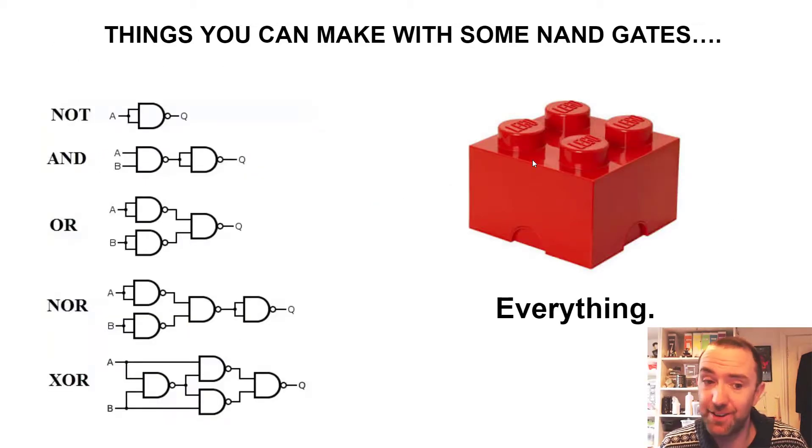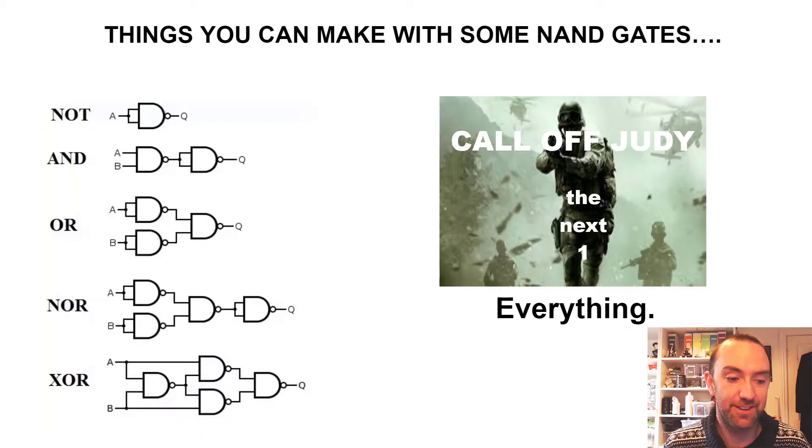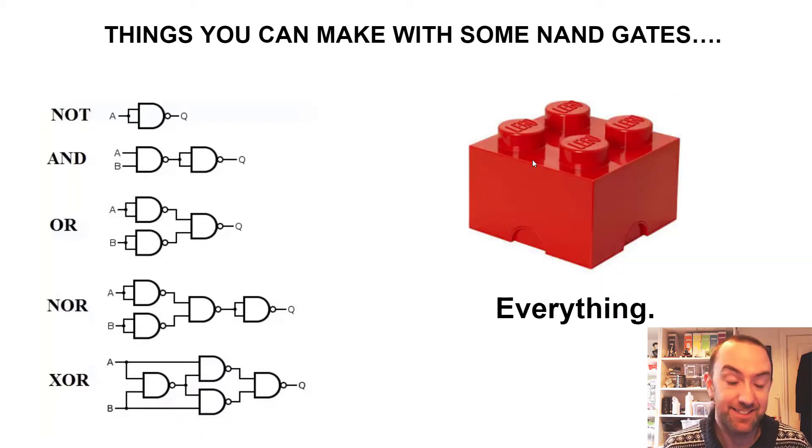And the implications are kind of interesting because you can actually get a NOT from a NAND. You can use that just repeatedly, just NAND, NAND, NAND, to make every other possible gate. So you can make ORs, you can make NORs and exclusively ORs, all just out of NANDs. So if that's all you got in your briefcase, you're sorted. You can literally make Call of Duty, the next one, out of NAND gates. Nothing else. Just NAND, NAND, NAND, NAND.